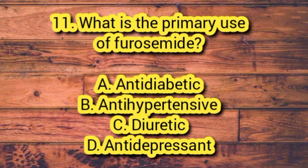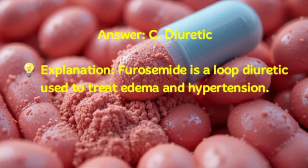Number 11. What is the primary use of furosemide? A. Antidiabetic. B. Antihypertensive. C. Diuretic. D. Antidepressant. Answer: C. Diuretic. Explanation: Furosemide is a loop diuretic used to treat edema and hypertension.